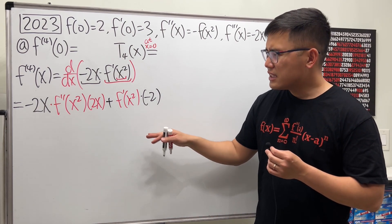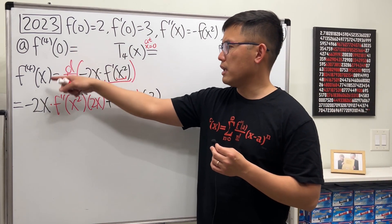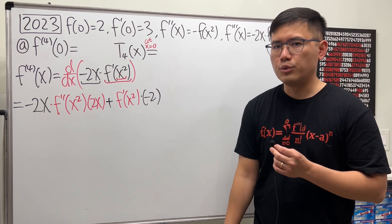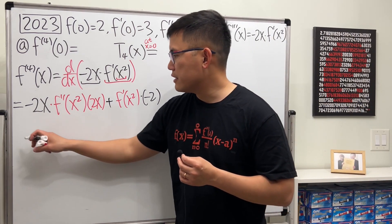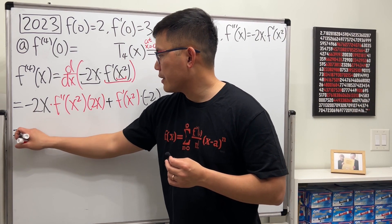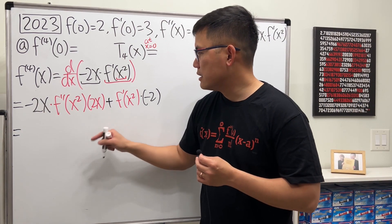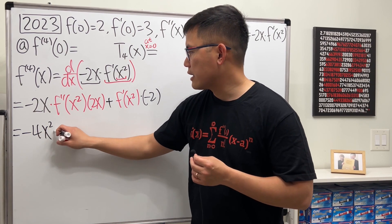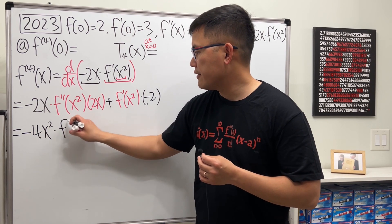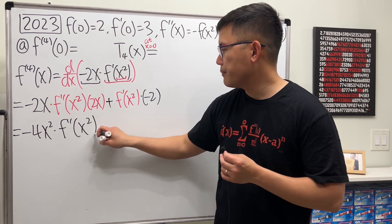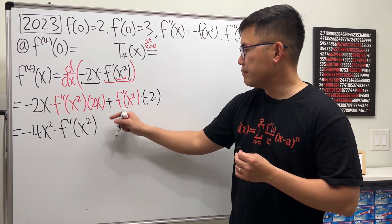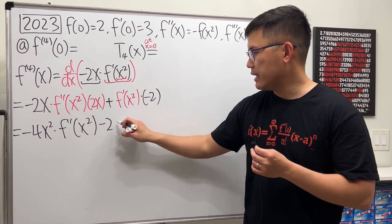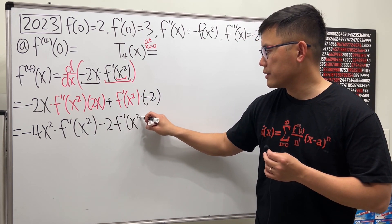You can simplify this a little bit, or you can just plug zero into all the x's — it doesn't really matter. I will simplify a little bit. This times this gives us negative 4x squared times f double prime of x squared, and then minus 2 times f prime of x squared.